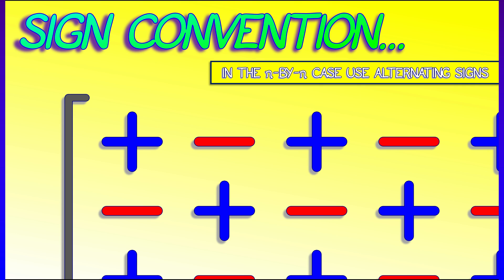If you remember this, when doing a minor expansion, you pick your favorite row or your favorite column, hopefully one with lots of zeros, and you are good to go.